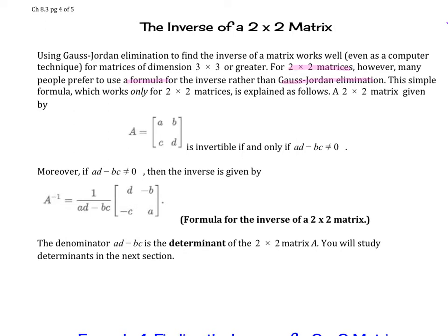This simple formula works only for 2 by 2 matrices and is explained as follows. A 2 by 2 matrix is given by A equals, and we have a, b, and then c and d here.